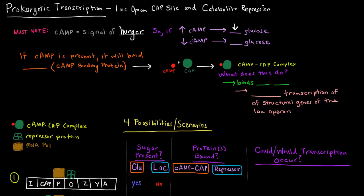If you have low cyclic AMP — a low amount of the hunger signal — that probably means the prokaryote already has glucose available. Now why is cyclic AMP important? If cyclic AMP is present, that means there are low glucose levels. It will bind CAP, the cyclic AMP binding protein, forming the cyclic AMP-CAP complex. This complex binds the CAP site on the lac operon and activates transcription of the structural genes.